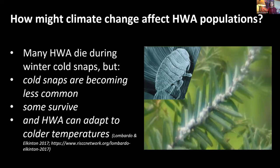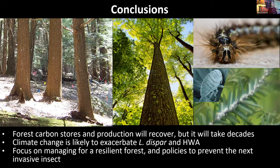How might climate change affect hemlock woolly adelgid populations? As noted in yesterday's talk by Caroline Marshner, with warming temperatures hemlock decline and mortality happens more quickly, because cold snaps are key to knocking back adelgid populations — but cold snaps are becoming less common as winter warming is the number one symptom of climate change in the Northeast. Even with cold snaps, some adelgids survive, and there is evidence that hemlock woolly adelgid can adapt to colder temperatures. Forest carbon stores and production will recover, but it will take decades — not 10 or 20 years.